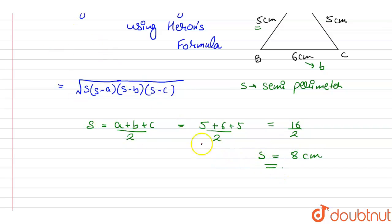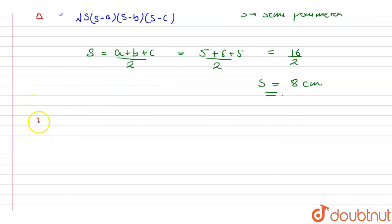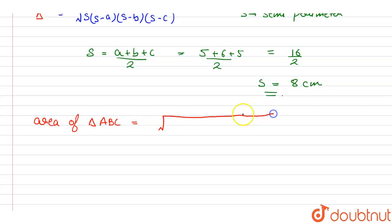Now we put the values of S, A, B, and C into Heron's formula. The area of triangle ABC equals the square root of S into (S minus A) into (S minus B) into (S minus C), that is, 8 into (8 minus 5) multiplied by (8 minus 6) multiplied by (8 minus 5).